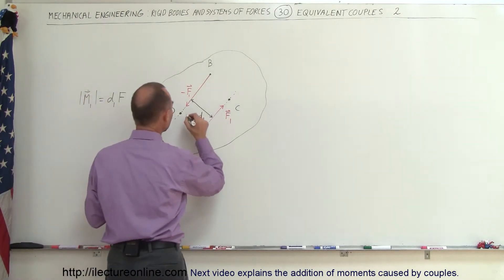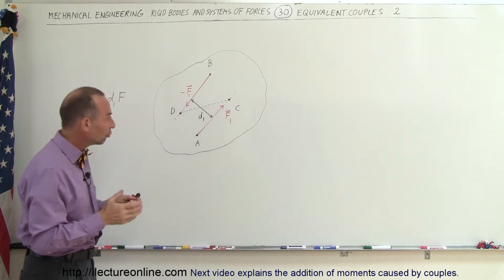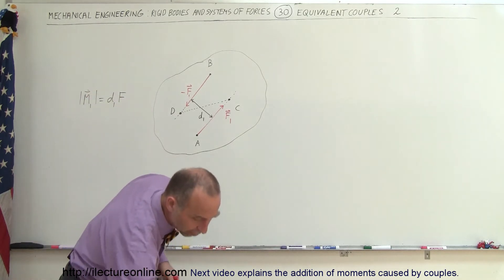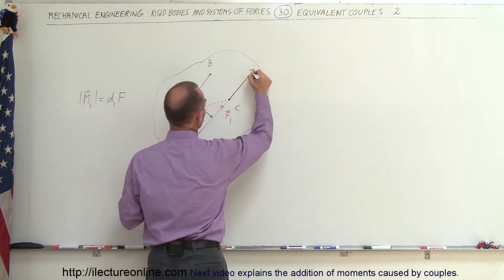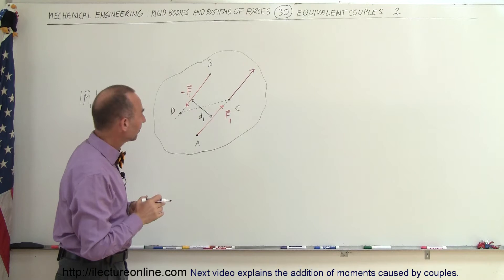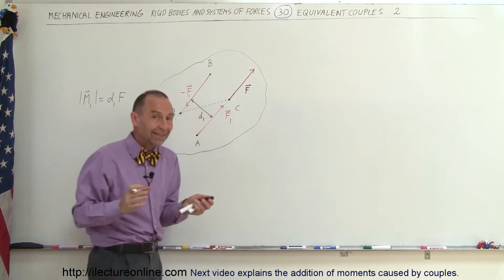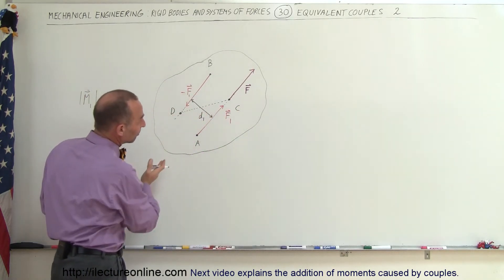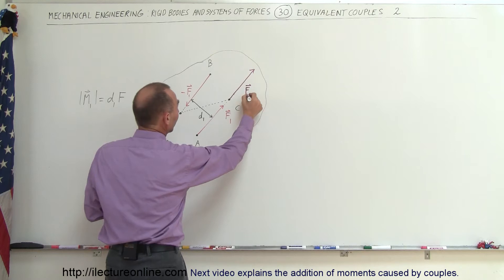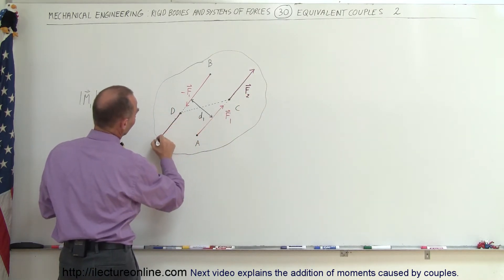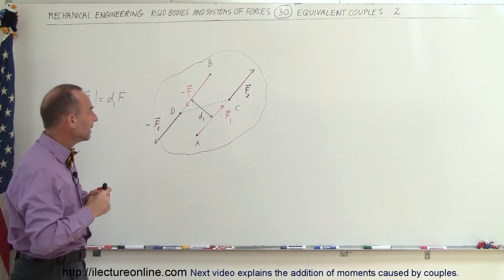Now let's draw a dashed line between these two, and redraw the two forces. To keep things easier to deal with, let's call the force at the new location F2. F1 and F2 are exactly the same — they both act along the same line of action, they're both the same length and therefore the same magnitude, so they're actually the same force. Let's call this F2 and this force negative F2. Notice both of those forces are exactly the same as F1 and negative F1.